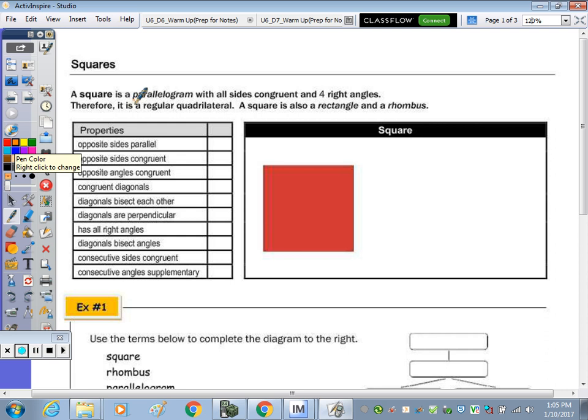So because of the parallelogram piece, I have a colored pen so I can put a different check. A parallelogram has opposite sides parallel, opposite sides congruent, opposite angles congruent, not necessarily congruent diagonals, the diagonals do bisect each other and consecutive angles are supplementary. The diagonals are congruent because it's a rectangle. It has four right angles because it's a rectangle. And then because it's a rhombus, the diagonals are perpendicular, the diagonals bisect the angles and consecutive sides are congruent.